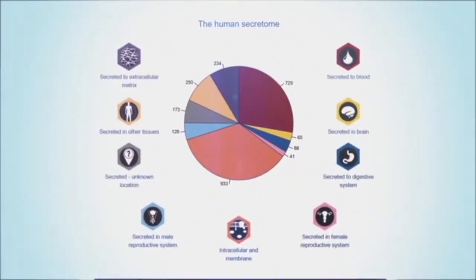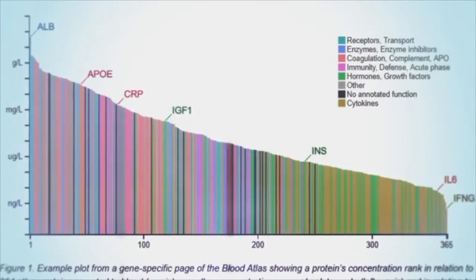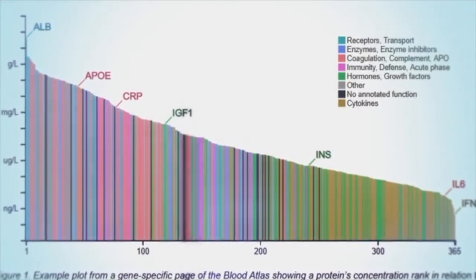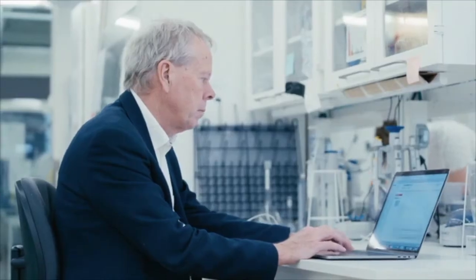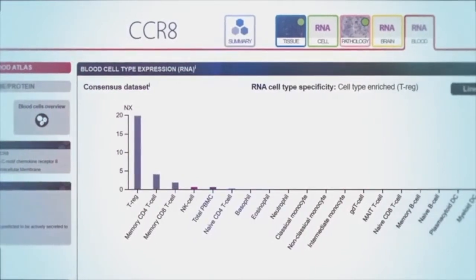The Blood Atlas shows information about the immune cells and the proteins present in the blood. Here, scientists can identify proteins which are restricted to a certain cell type, such as, for example, the regulatory T cells.